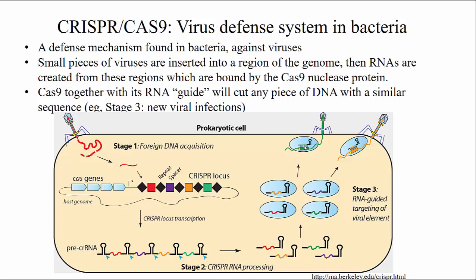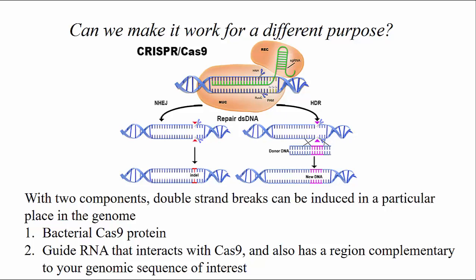This system was initially studied just because it is an interesting defense system bacteria use against viruses. But some scientists had the interesting idea that maybe this could be used for a different purpose. One long-standing challenge in genetics has been making changes in genomes of living cells in a directed way, and people studying CRISPR-Cas9 had the idea that maybe they could transport the parts of this system from bacteria into a mammalian cell and have it actually target a particular place in the genome to be changed.